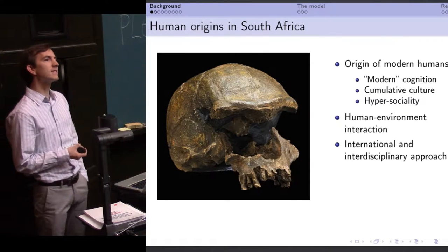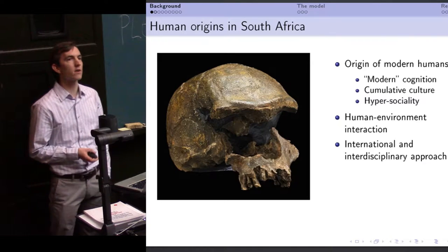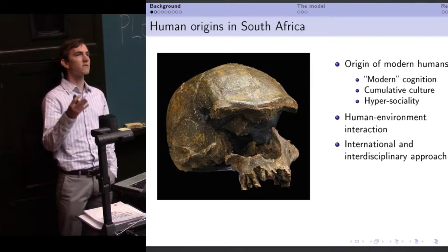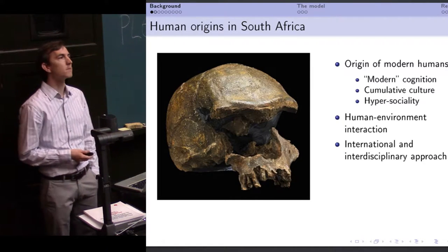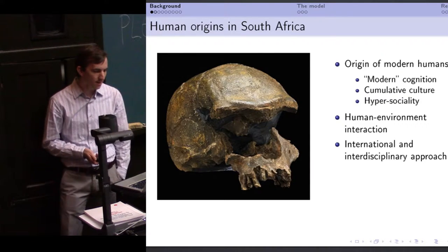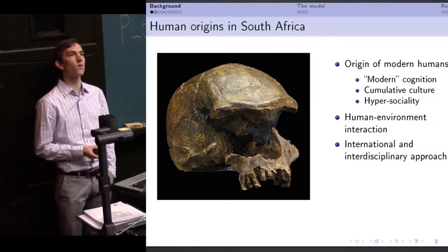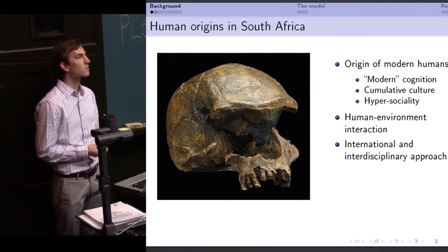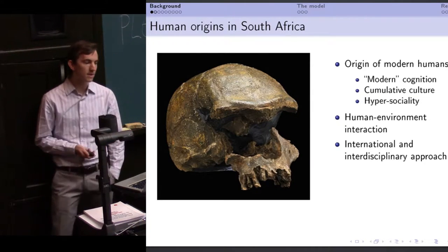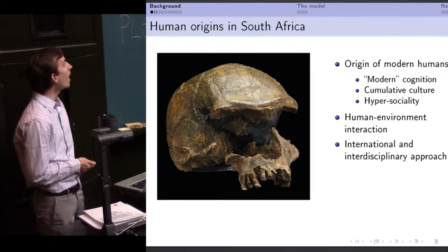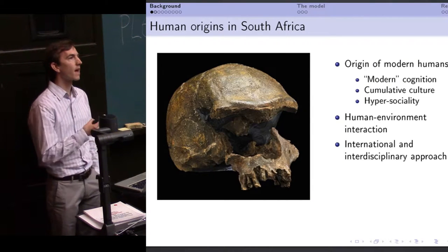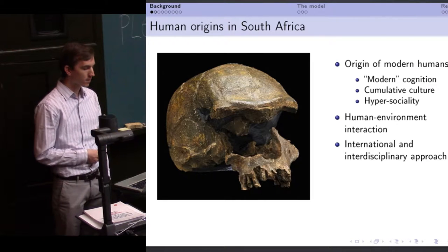So South Africa is the context of the origin of modern humans, both behaviorally and biologically. We're talking about origins of modern cognition, cognitive capacity, early stages of cumulative culture really kind of taking off as a key to our adaptation, hypersociality as well. These things together form what our grant application is titled, the origins of human uniqueness. So a very important time in the world for our species. All of this of course is wrapped around this interaction between humans and their environment, both in terms of the evolution of behavior and biology.